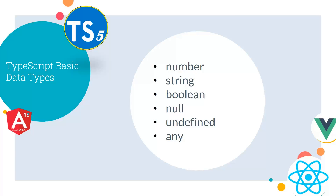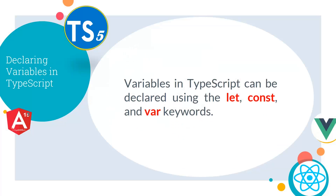Then we have null and undefined data types. Null is the intentional absence of a value and must be assigned to a variable. Undefined is the unintentional absence of a value, and the default value of any unassigned variable is undefined. The 'any' data type is used when a variable's type is unknown or hasn't yet been defined.